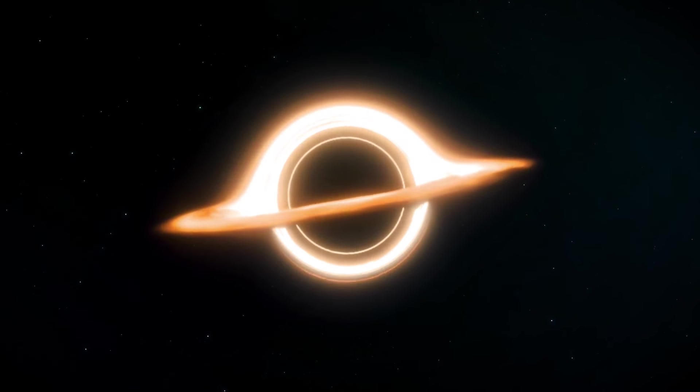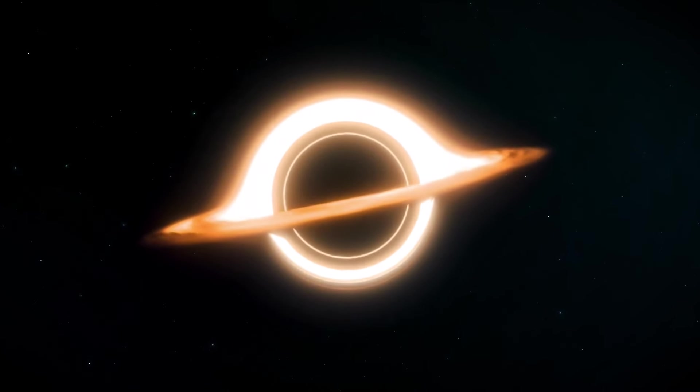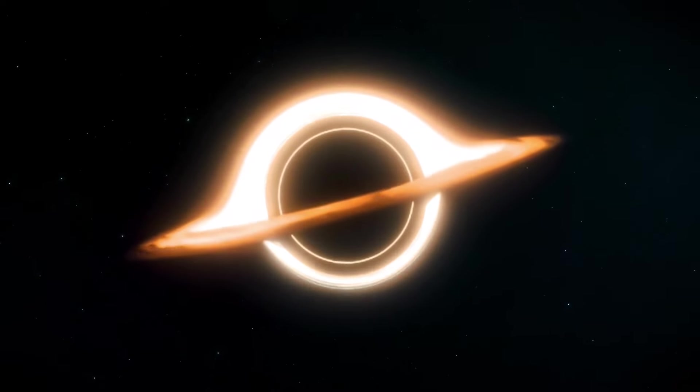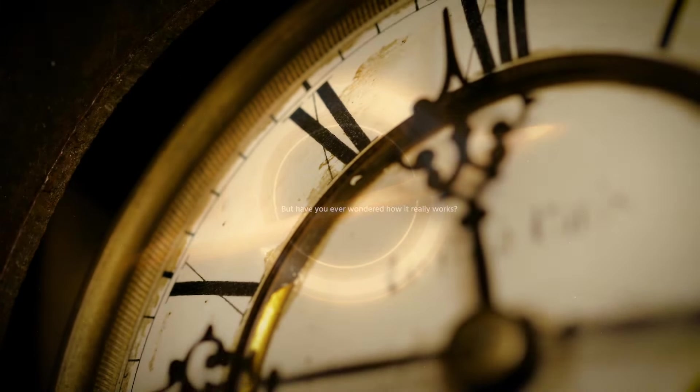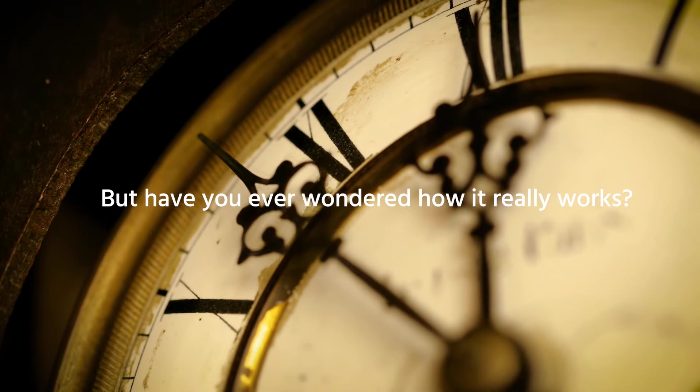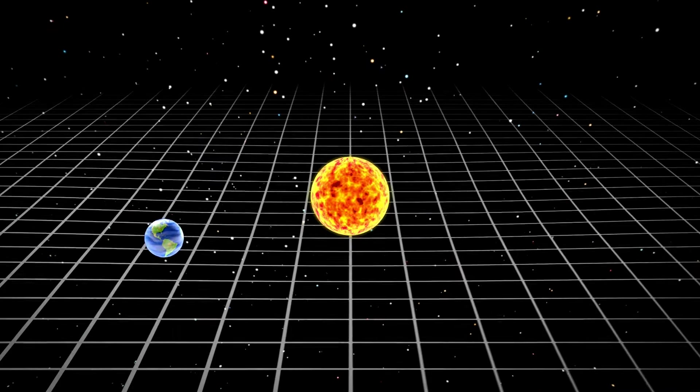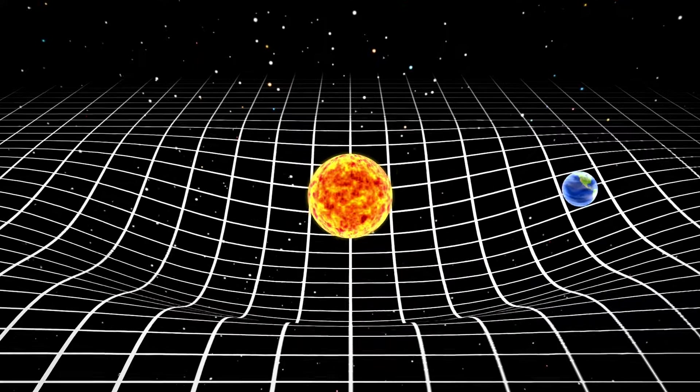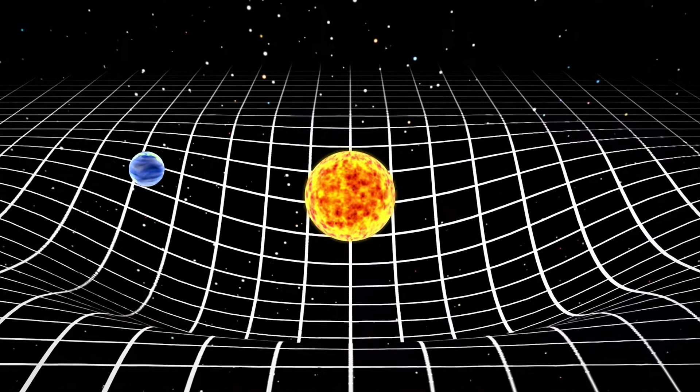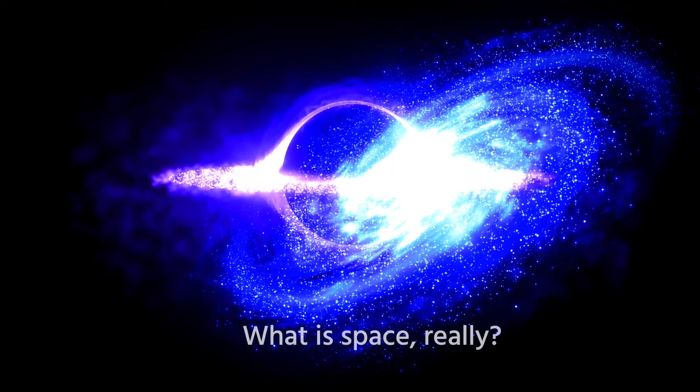Inevitably, the darkness would envelop them for all eternity. Over a hundred years ago, Einstein turned our understanding of time and space upside down with his relativity theories. But have you ever wondered how it really works? Time and space seem like everyday concepts, right? But beneath their familiar surface, there are loads of mysteries we're still figuring out. What is space, really?